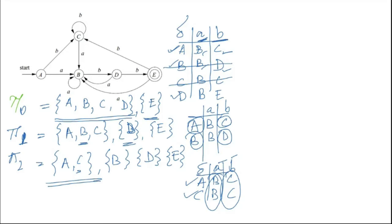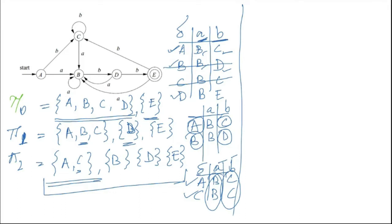At this point we have already found the states which we will have in the minimized DFA. Next, we will construct the minimized DFA. What will be our initial state? The initial state in the current DFA is A, and A is part of the set A,C — so A,C will become our new initial state.